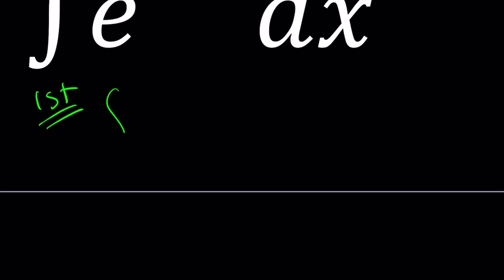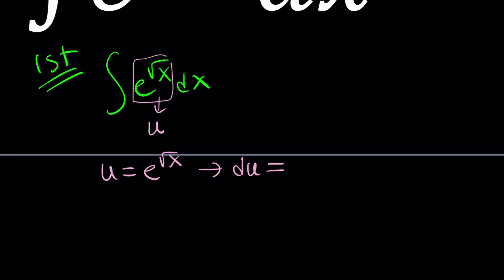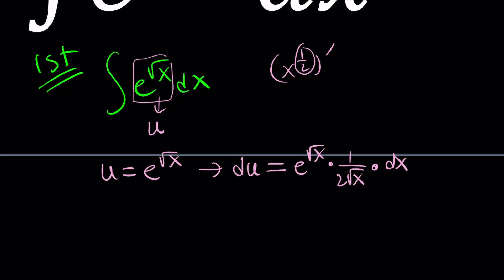We have this integral, e to the power square root of x dx, and I want to use u substitution — replace e to the power square root of x with u. So we have u equals e to the power square root of x. From here, we have to find du. So du is going to be the derivative of e to the power square root of x with respect to x, which is e to the power square root of x times the derivative of the inside from the chain rule, which is 1 over 2 square root of x. That's the derivative of the square root of x.